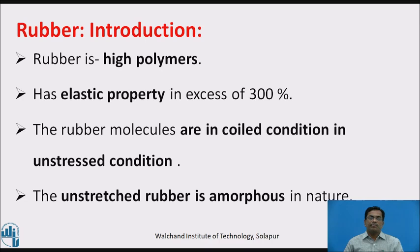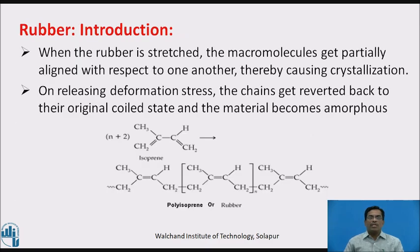Rubber introduction. Rubber is a high polymer. It has elastic property in excess of 300%. The rubber molecules are in coiled condition in the unstressed state. The unstretched rubber is amorphous in nature. When the rubber is stretched, the macromolecules get partially aligned with respect to one another, thereby causing crystallization. On releasing the deformation stress, the chains revert back to their original coiled state and the material becomes amorphous.